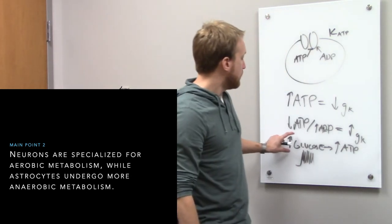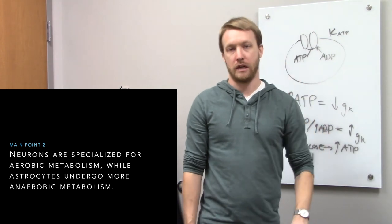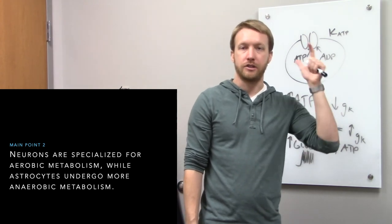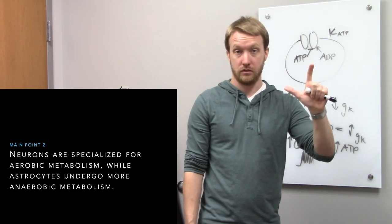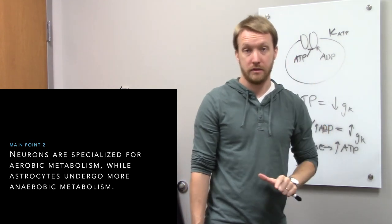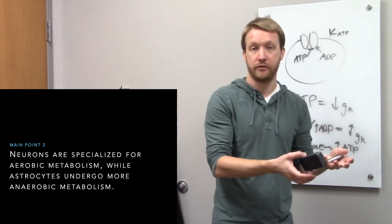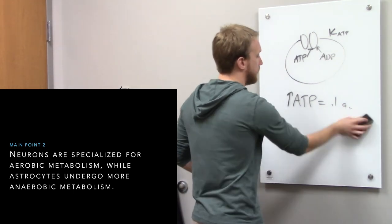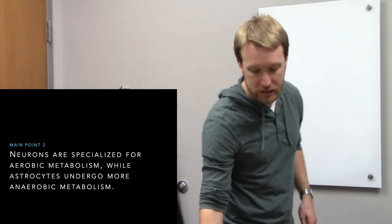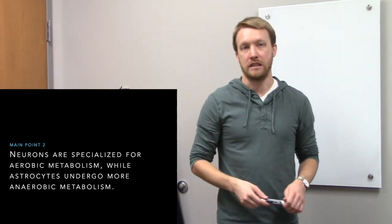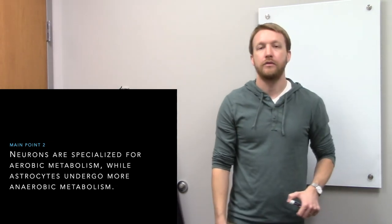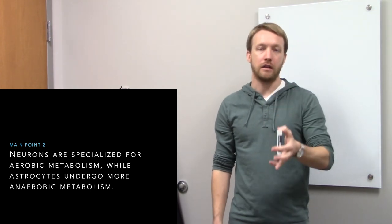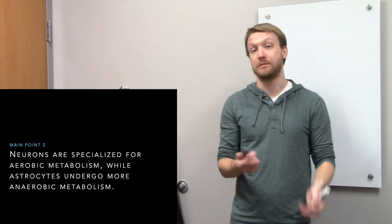When we bring in glucose, the ultimate goal is to make ATP. We can think of this as a two-step process: glycolysis, or anaerobic metabolism, and then pyruvate oxidation followed by oxidative phosphorylation, or aerobic metabolism. Anaerobic happens in the cytoplasm; aerobic in the mitochondria. In anaerobic metabolism we're breaking down glucose into pyruvate; in aerobic we're breaking down pyruvate into carbon dioxide and making a lot more ATP. We think of astrocytes as undergoing higher levels of glycolysis, and neurons higher levels of oxidative phosphorylation — they make more ATP because they need to spend more.